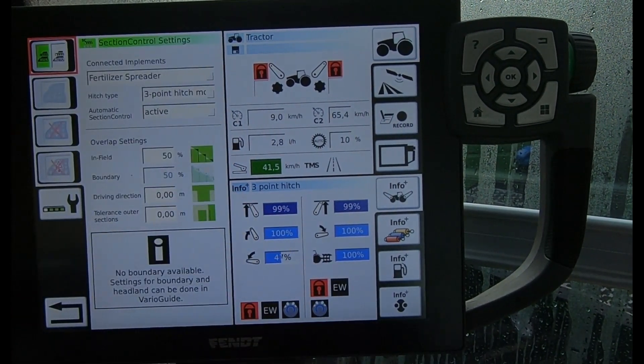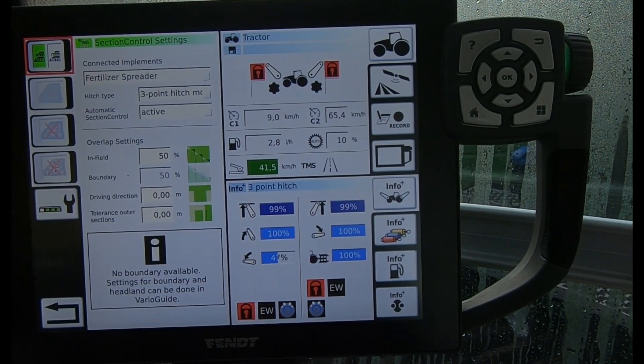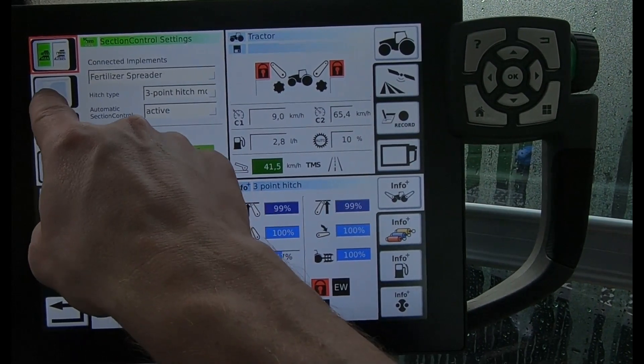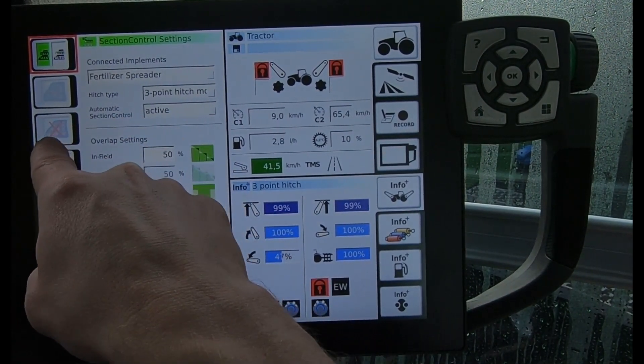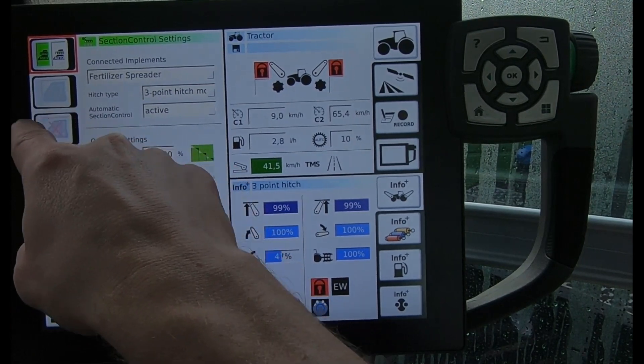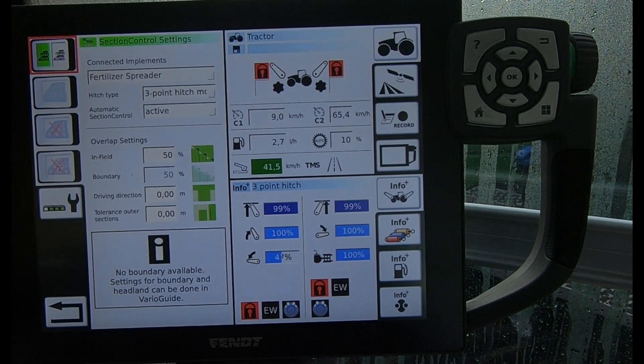If I double press again on my section control button, we can see we've got some more settings available to us. Again, that allows us to do the middle of the field first and the headland last. This one here then would ignore the field boundary.